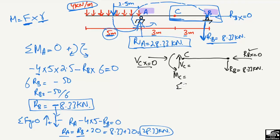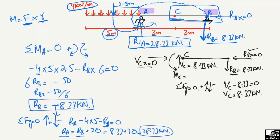To find VC, take the summation of vertical forces equal to zero, with upward forces positive and downward forces negative. VC is acting upward (positive), and RB = 8.33 kN is acting downward (negative). So: VC − 8.33 = 0, giving VC = 8.33 kN. This is the shear force at point C.